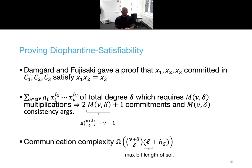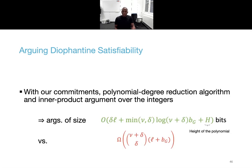Damgaard and Fujisaki had already given a multiplication argument over committed integers. It means that if a polynomial of total degree delta requires m multiplications, then one would have to compute 2m plus 1 commitments and m consistency arguments to argue for the satisfiability of the related equation. The resulting communication complexity is then at least of this order. But with our commitment and arguments and polynomial degree reduction algorithm, the communication complexity of our argument is rather of these many bits. And in many cases it shows that there is an exponential decrease in the size of the argument. And here h represents the height of the polynomial. The paper applies these techniques to some of the problems mentioned in the introduction and gives estimates for the resulting sizes of the argument.